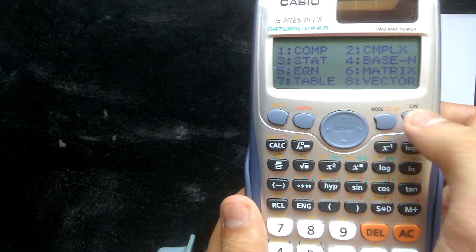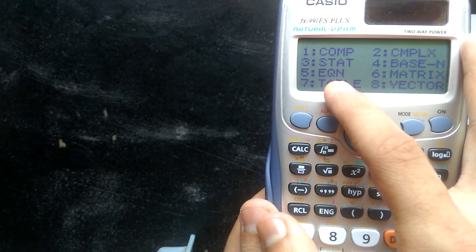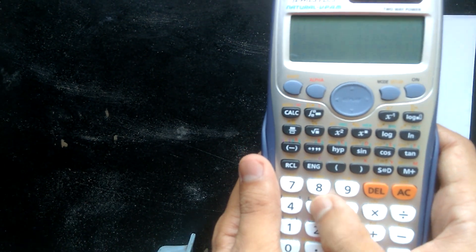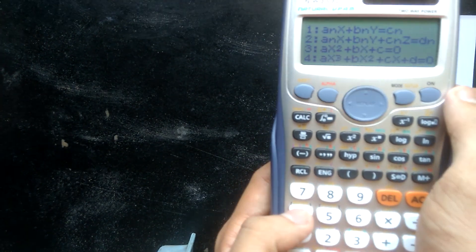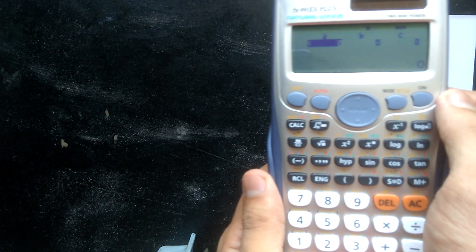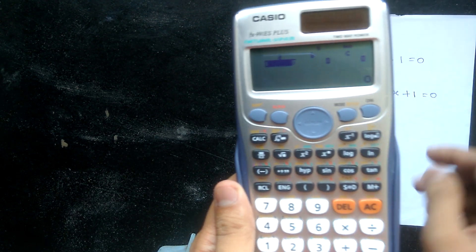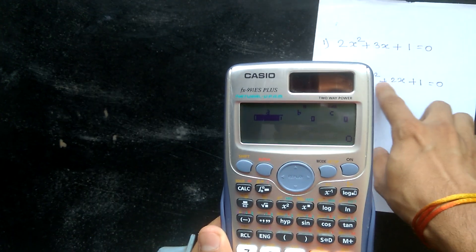Press the MODE button. We have an equation mode at number 5, so press 5. We have cubic equation at number 4, so press number 4 button. As we have the equation 4x³ + 3x²